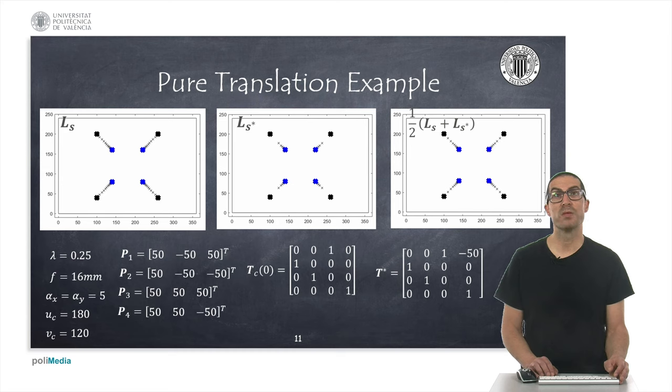In this case, the three proposals generate a linear displacement on the Z axis of the camera. They are practically identical. The only difference is that the simulation in the middle provides a slightly faster convergence than the other ones.